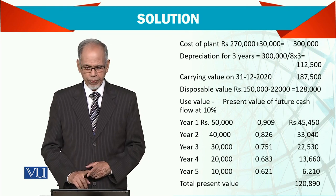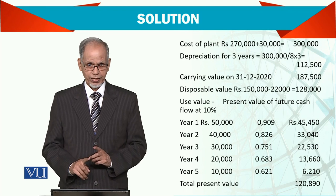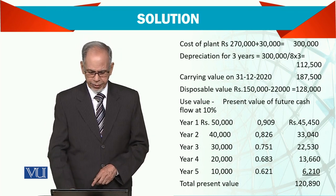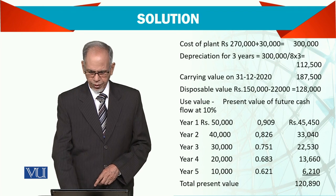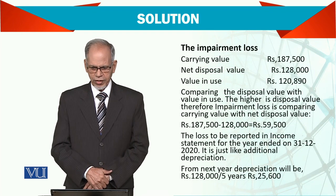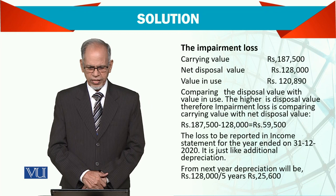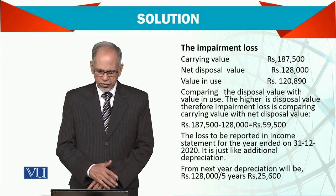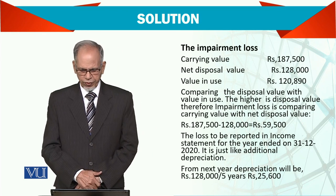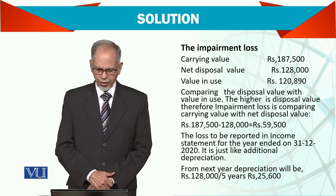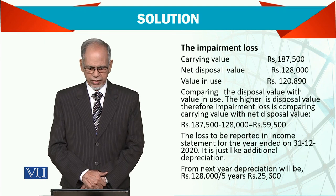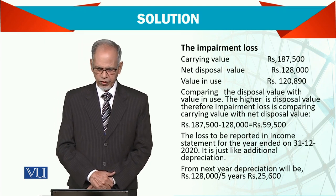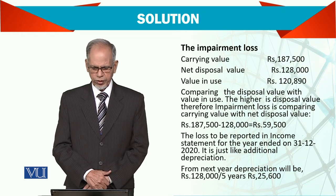Now we compare the highest of the two: the sales value versus the value in use. So we compare — the carrying value is $187,500 and the net disposable value is $128,000. So the impairment loss is $59,500, and this loss is to be reported in the income statement for the year ended 31st December 2020.